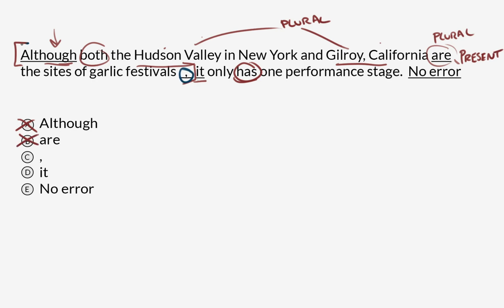Now this comma—we've already established that this bracket here is a dependent clause connecting to an independent clause. This is how you would use a comma in this case. You use a comma to staple together a dependent clause like 'although both the Hudson Valley in New York and Gilroy, California are the sites of garlic festivals' to an independent clause like 'it only has one performance stage.' This is fine also.